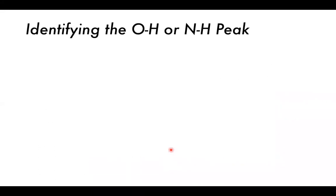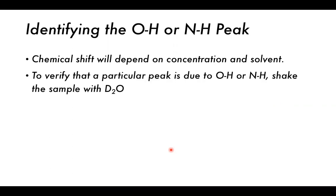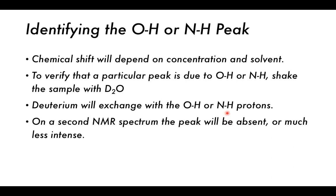To identify if a peak is due to OH or NH, we shake the sample with D₂O. This causes deuterium exchange with OH or NH protons to give OD or ND. On the second NMR spectrum, the peak will be absent or much less intense because deuterium is not proton NMR active — its spin is 1 rather than ½.